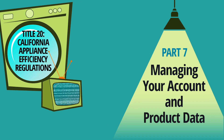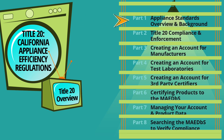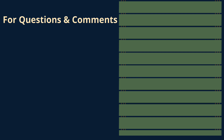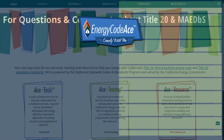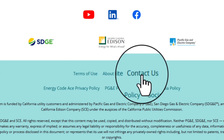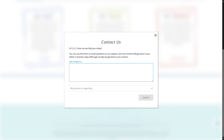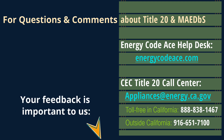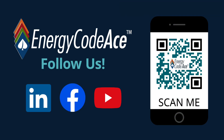Thank you for joining us for Part 7 of the Title 20 video series. Be sure to check out the other sections that are of interest. If you have questions and comments about the Title 20 technical requirements or compliance process, you can contact us at energycodeace.com by clicking the Contact Us link at the bottom of the page. You'll need to be signed in to Energy Code ACE to access the request form. Or reach out to the CEC by emailing or phoning their Title 20 call center. If you think this content was helpful, please consider clicking the Like button, and we encourage you to add a comment to give us more detailed feedback. To stay up to date on Title 20 and the latest Energy Code ACE offerings, be sure to follow us on LinkedIn, Facebook, and YouTube.